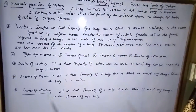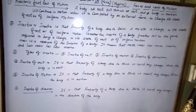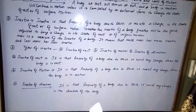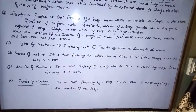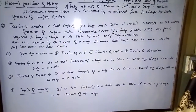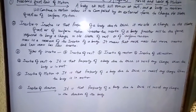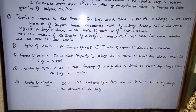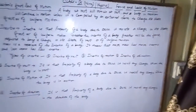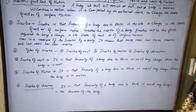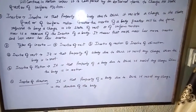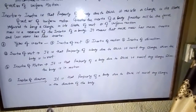Inertia किसी वस्तु का वह गुण है जो चाहता है कि यदि वस्तु स्थिर है तो स्थिर रहे, और यदि वस्तु गतिशील है तो गतिशील रहे। यह property है किसी वस्तु का। Inertia और mass का सम्बन्ध है — जिस वस्तु का mass अधिक होगा, उसका inertia भी अधिक होगा।